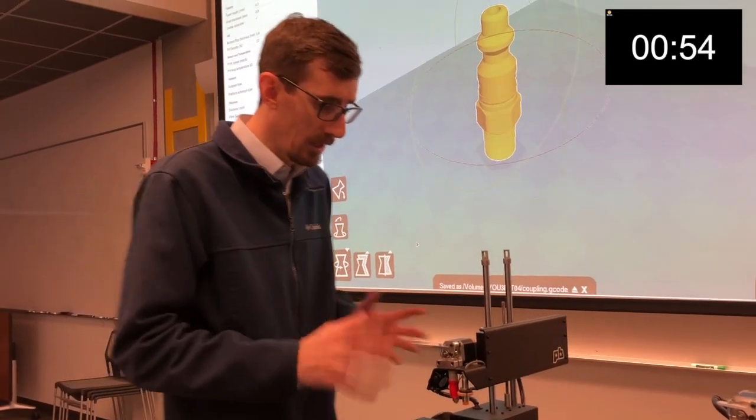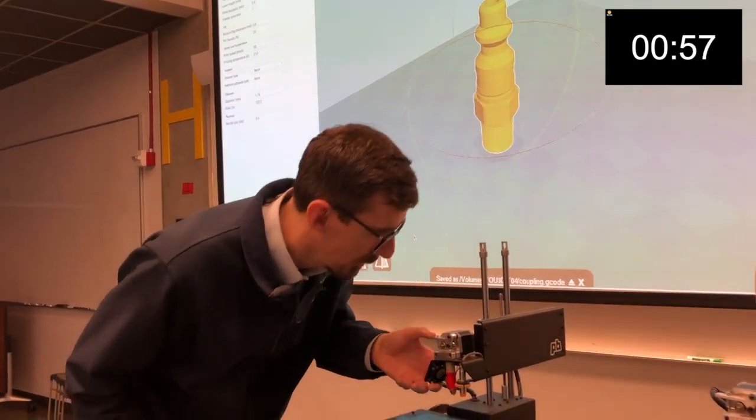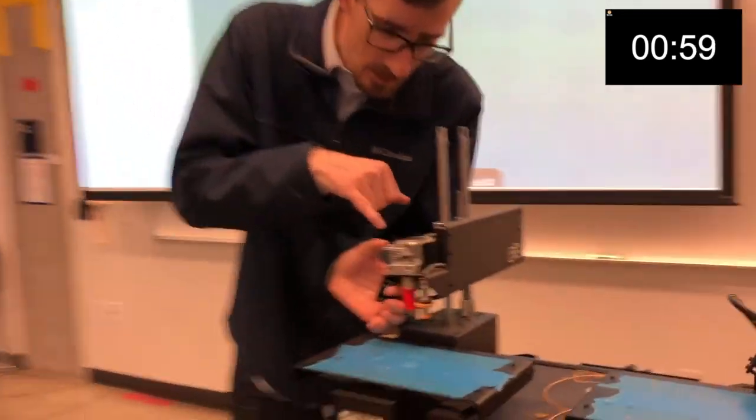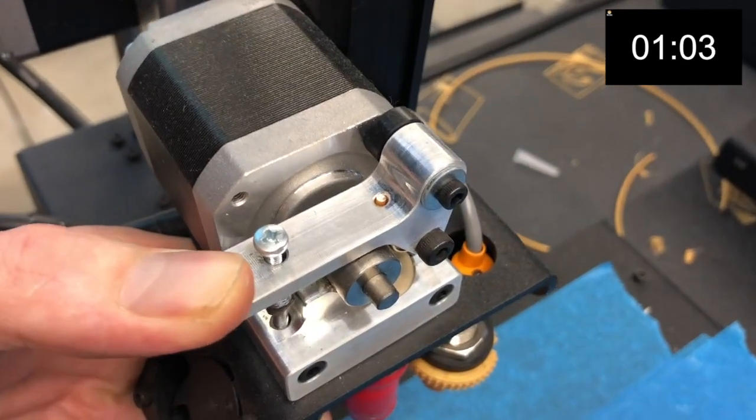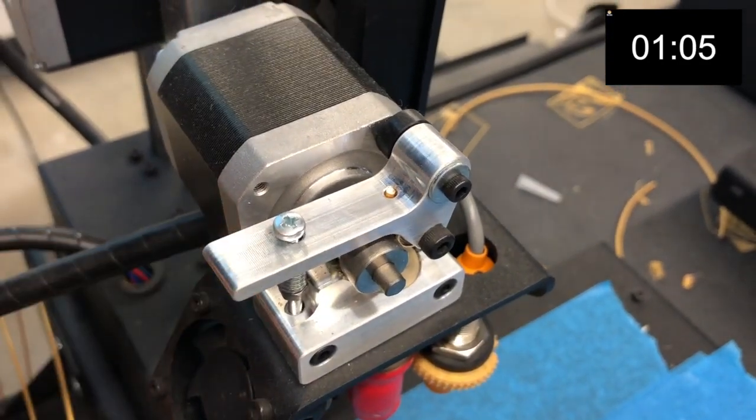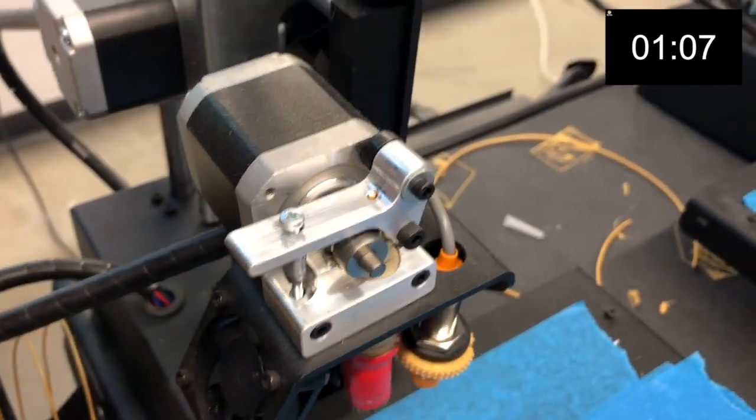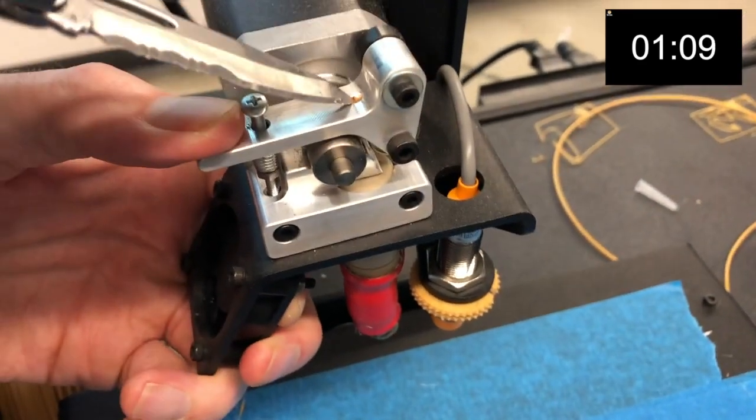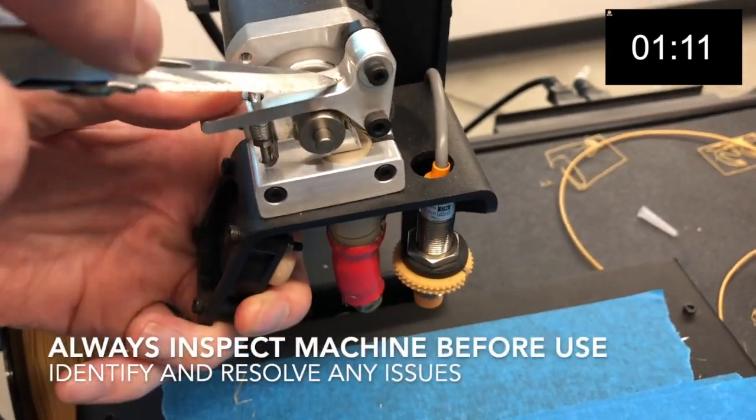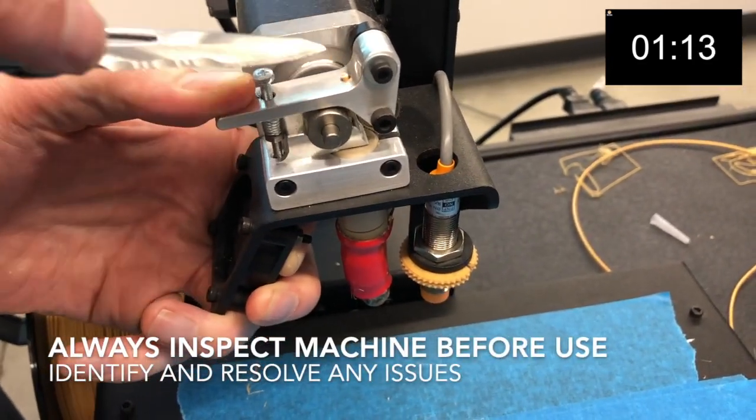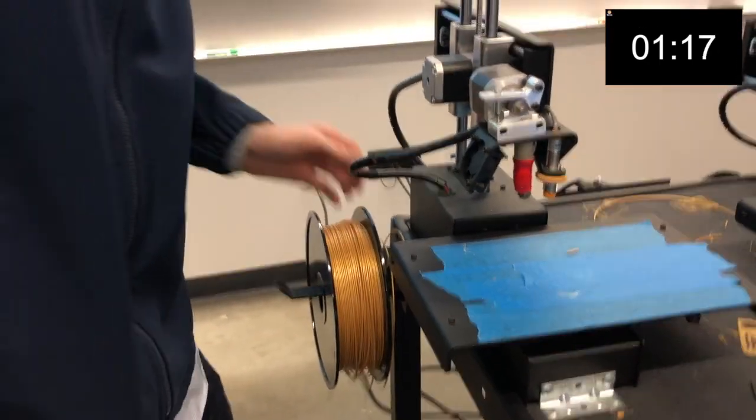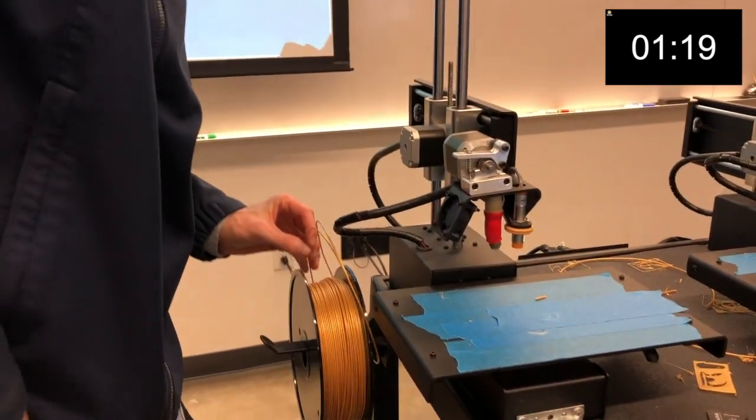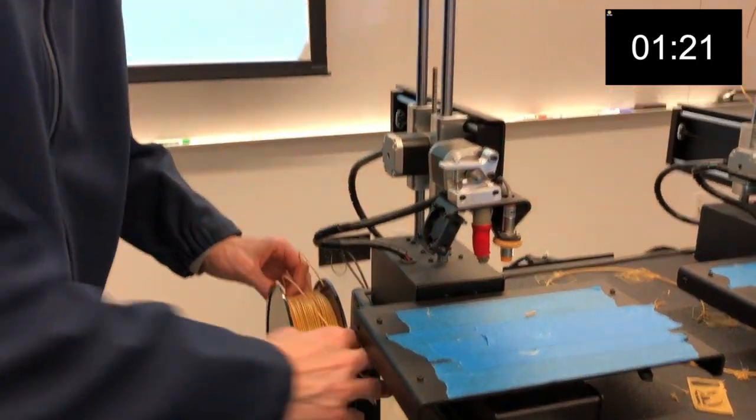It's going to warm up to about 200-208 degrees centigrade, then go into its homing process back to zero, then start our print. If everything's leveled and calibrated you'll be in good shape. I already see a problem - the filament has broken off into this little hole.